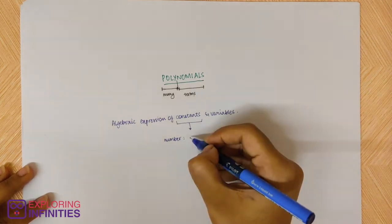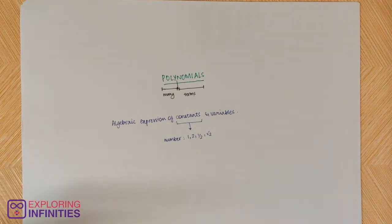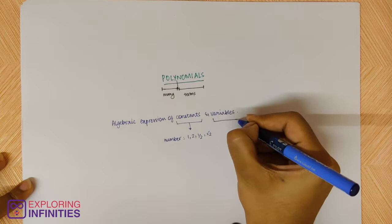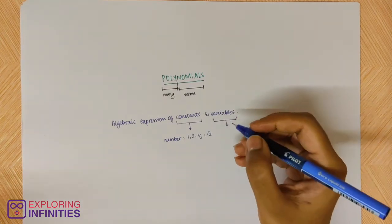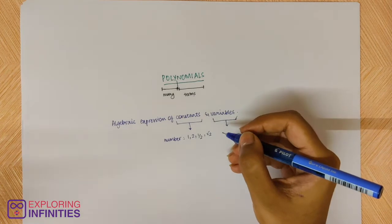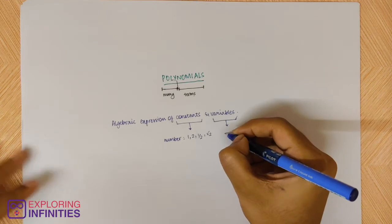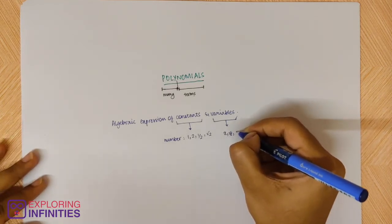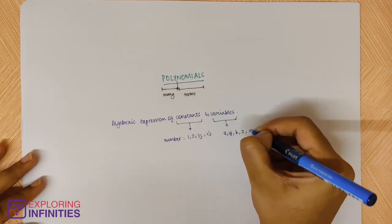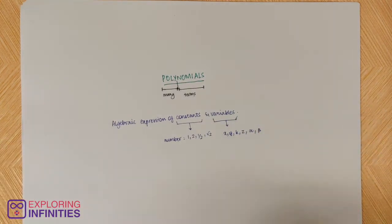You can say 1, 2, one-half, root 2 — all of these are constants in an equation. Now, what are variables? Variables are values which are not predetermined; you have to calculate those values, or those values are ever-changing. The way you depict them in general is x, y, k, z, alpha, beta, or any other letter to determine variables.